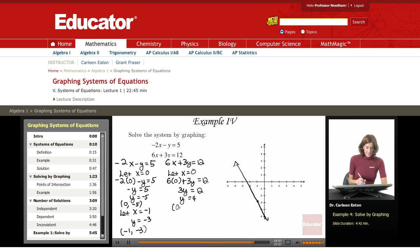So at my first point, x is 0, y is 4. For my second point, I'm going to let x equal 1. And if I worked that out, I would see that I would get 6 times 1 plus 3y equals 12, or 3y equals 6.